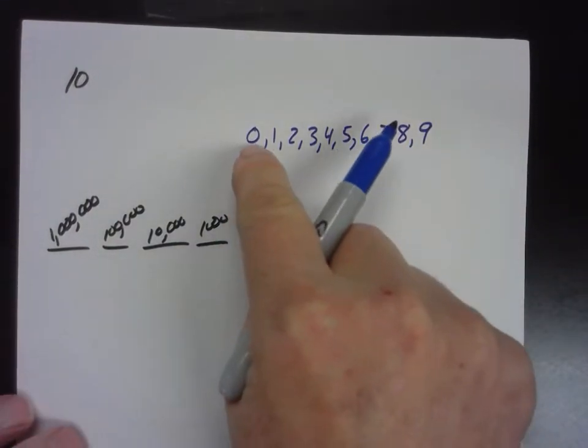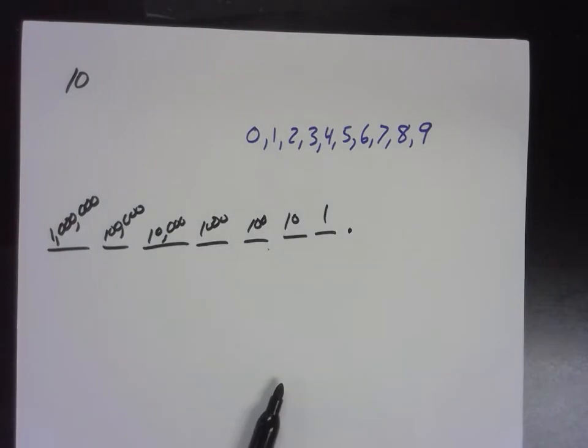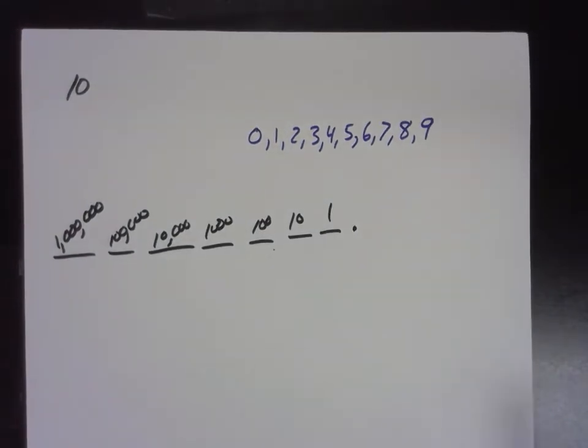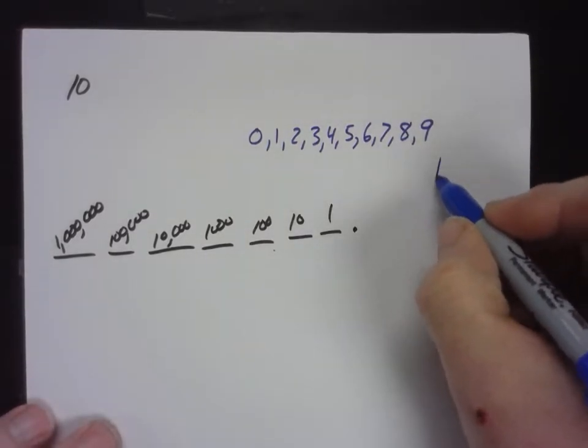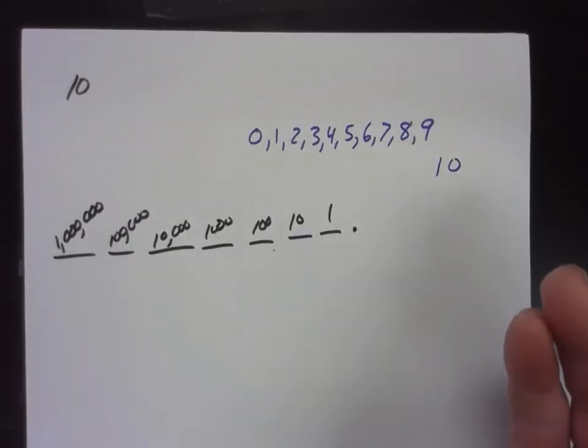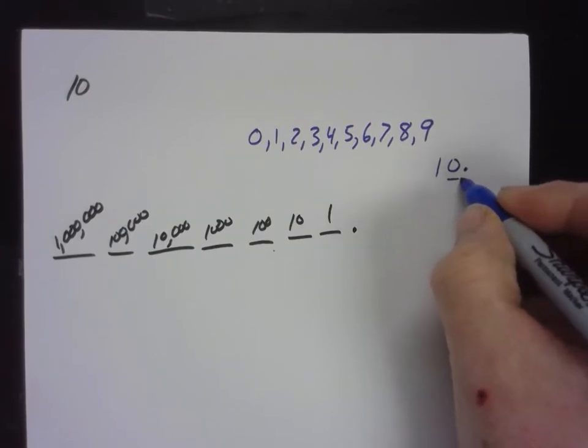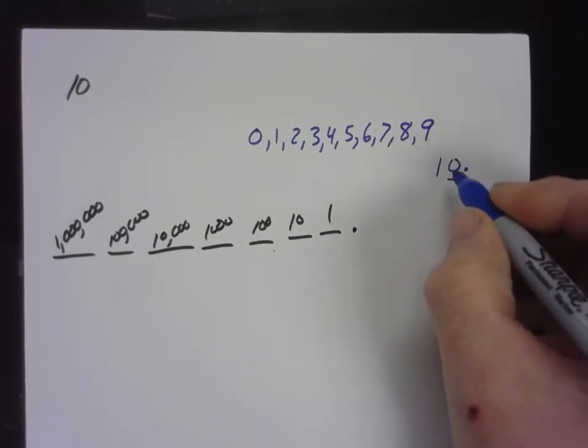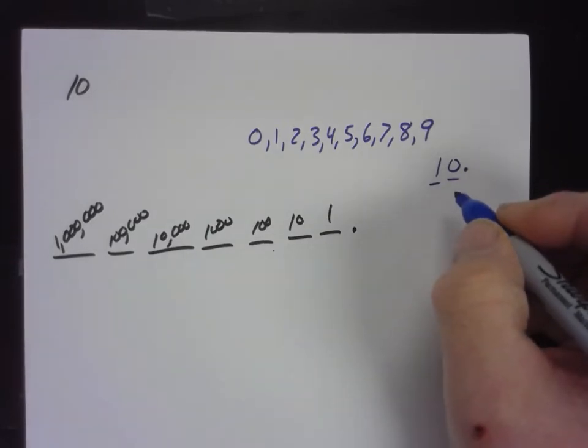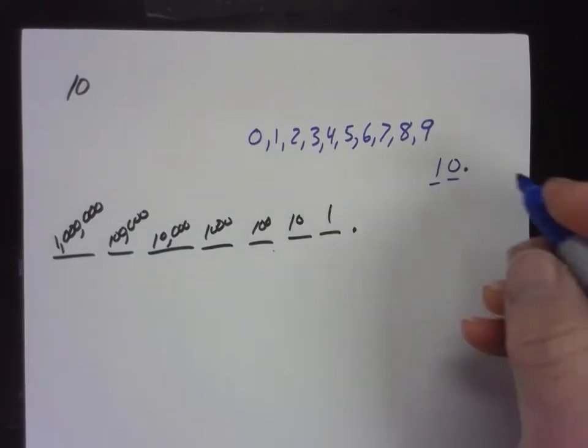There are 10, aren't there? And without the decimal system, that's all we could write. We couldn't write anything greater than 9. Even to write a 10, you have to have the decimal system. Because when we write a 10, everybody has to understand that there's a decimal right here. And this is the 1's place, and we have 0 1's. And this is the 10's place, and we have 1 10.